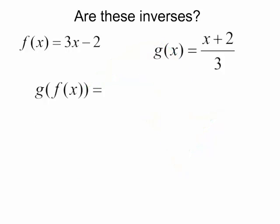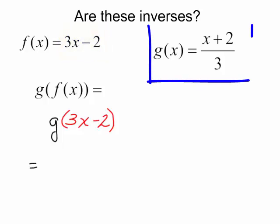I will bring down my g and I will plug in f of x, which is 3x minus 2. And now I will look at my g function. The rule is to take what's in the parentheses, add 2, divide by 3. So I will take what is in the parentheses, and I will add 2 and divide by 3.